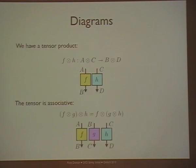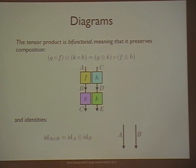As well as sequential composition, we have parallel composition — the tensor product. Again it's associative, so I can just write down the diagram without worrying about brackets. And as Bob mentioned, because we're in this diagrammatic language, we get some equations for free — for instance the interchange law between sequential and parallel composition, which just translates into a single diagram. So you get some equations for free by using the diagrammatic language.